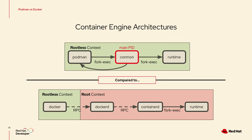Another difference from Docker — this is how rootless works. When you run Docker, there is a daemon running — the Docker daemon — and it is running as root on your machine and will launch containers. With Podman, it's forking a process and it can all run as rootless.